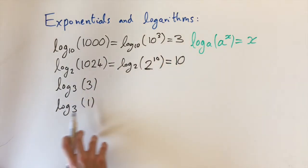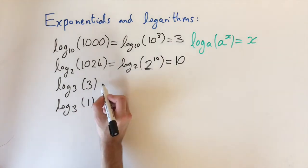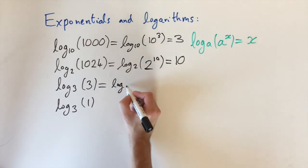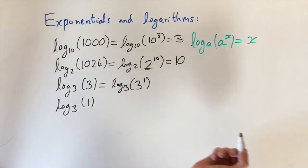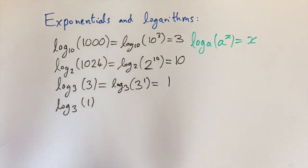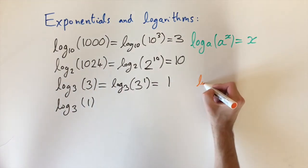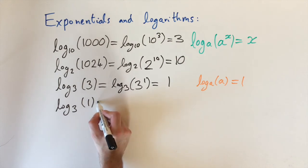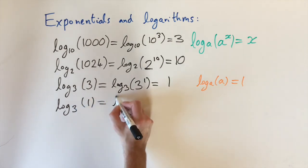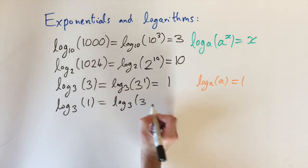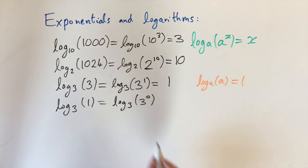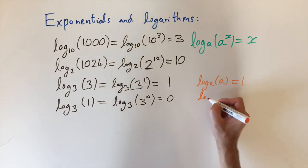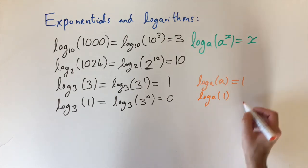Now two special cases that are important to be aware of. First, log base 3 of 3: since 3 equals 3 to the power of 1, this equals 1. This is true in general — for any base, log base a of a equals 1. For the last example, log base 3 of 1: since 1 can always be expressed as any number to the power of 0, we write it as 3 to the power of 0, so the logarithm of 1 is always 0. In general, log base a of 1 equals 0 for any base.